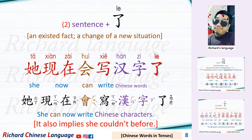A sentence plus 了. This sentence pattern indicates an existing fact or a change of a new situation. For example: 她现在会写汉字了 — She can now write Chinese characters. This sentence also implies she couldn't before.